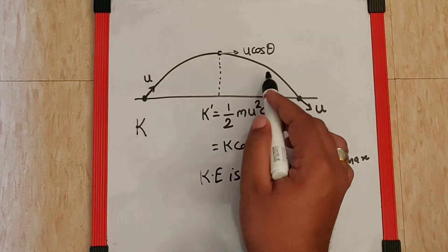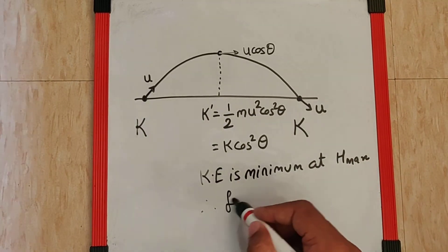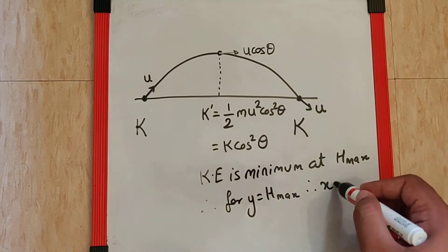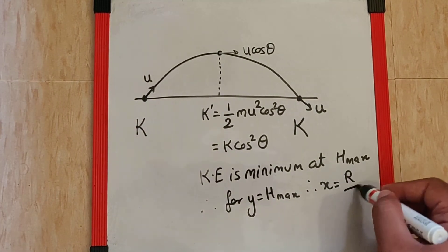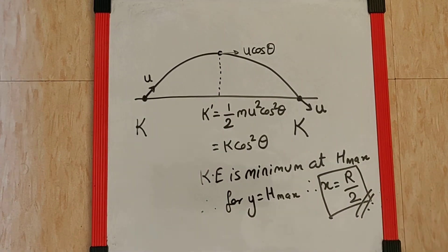Now, to reach h_max you have to cover half the range. Therefore, for y to equal h_max, the horizontal distance must be R/2, and that is your final answer. So you get the minimum kinetic energy at 0.5R.